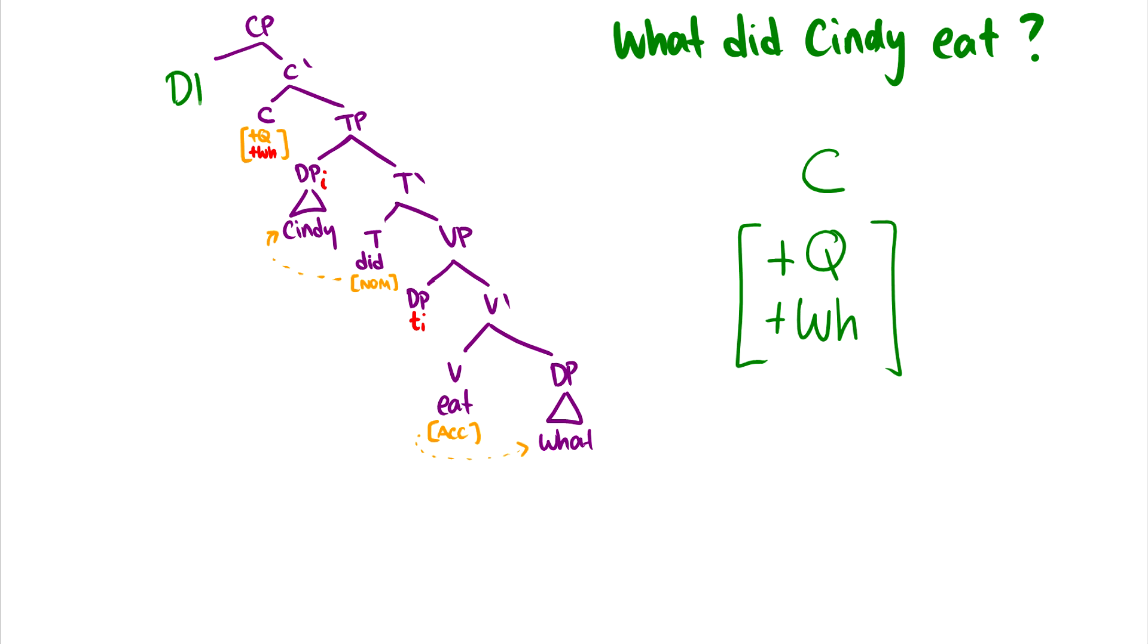So in order for the sentence to be okay, we have to pull WH words up to spec CP. So in this case, we have our new spec CP, which is the DP, which is what. And this is movement from the object position of eat. Now we end up with what did Cindy eat?